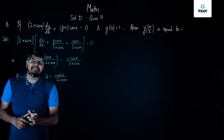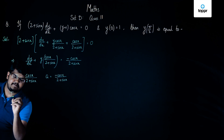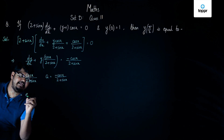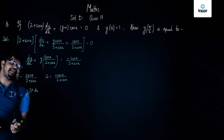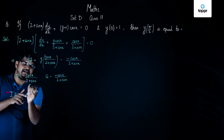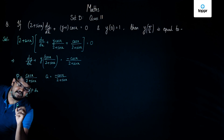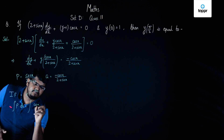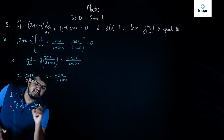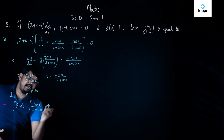Now we have to find the integrating factor. We know that the integrating factor is given as e raised to the power ∫P dx. To find ∫P dx, we compute the integration of cos x/(2 + sin x) dx.